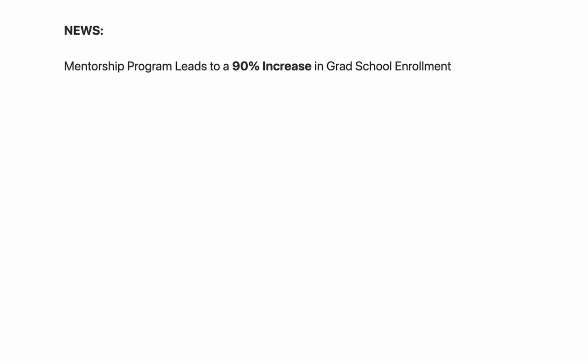So what do we make of this? How do we interpret this? A lot of people might look at this and think, man, 90% increase — so by the end, it seems like almost everyone is going to grad school who got the mentorship program. But when you crack open the study and look into the details, they say that 10% of the control group enrolled in grad school, whereas 19% of the treatment group enrolled in grad school.